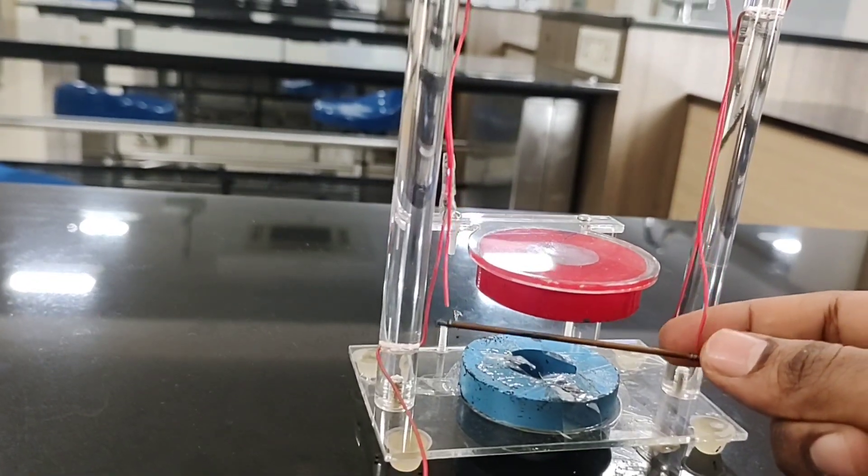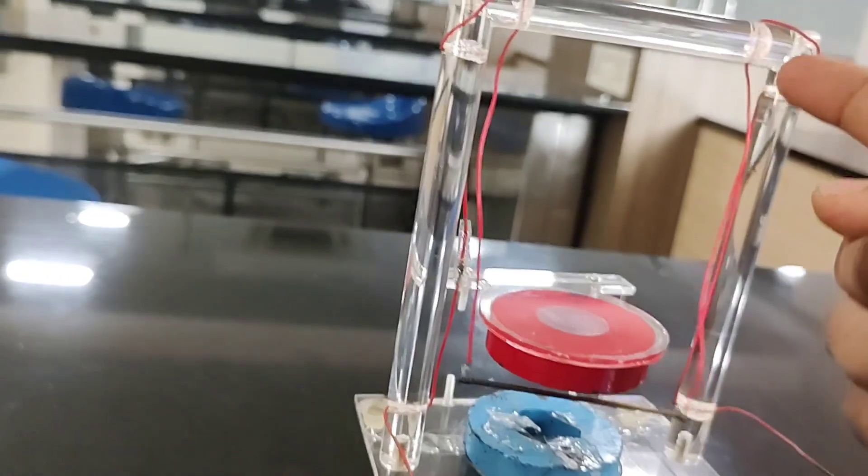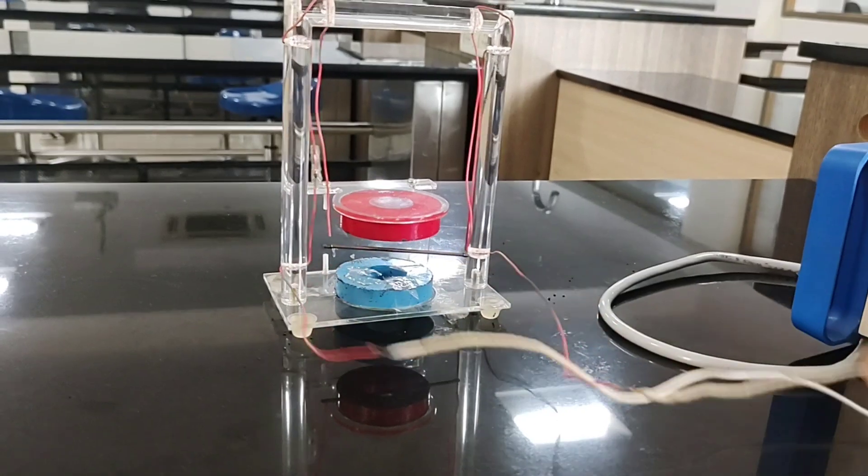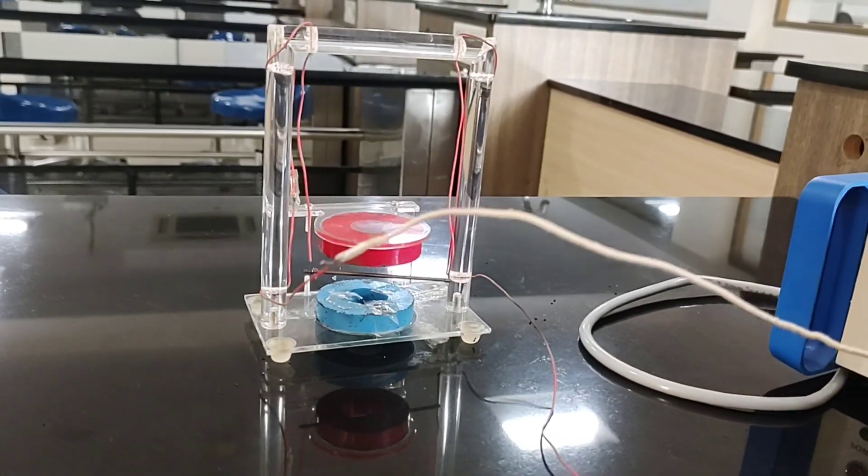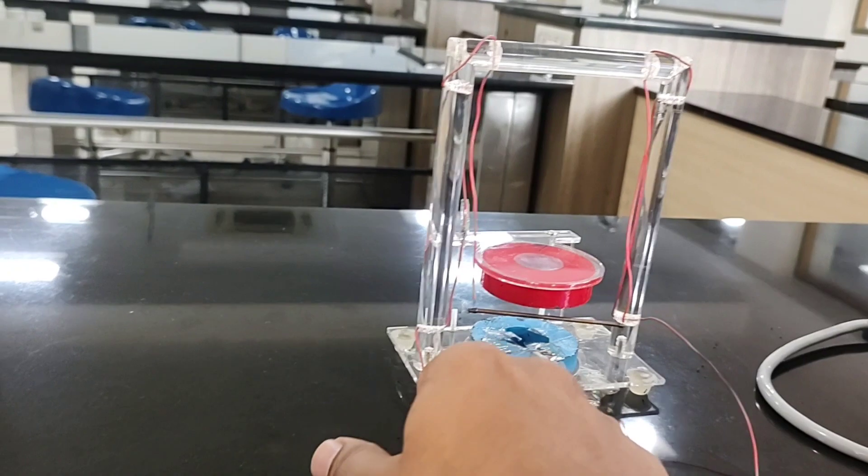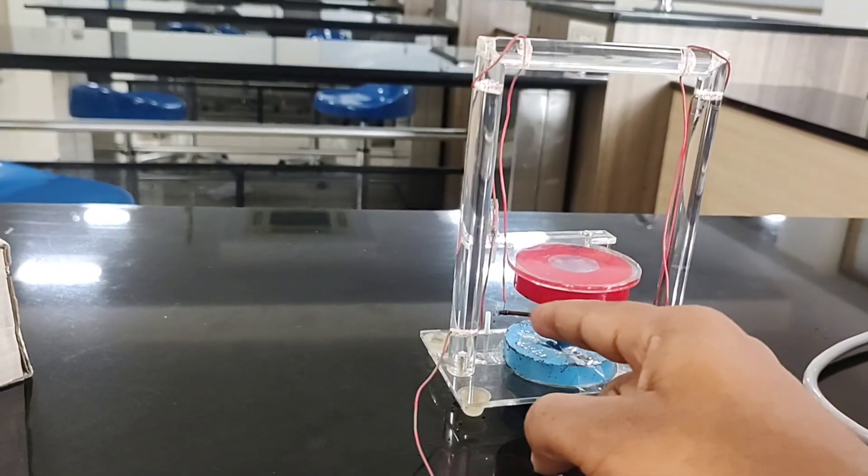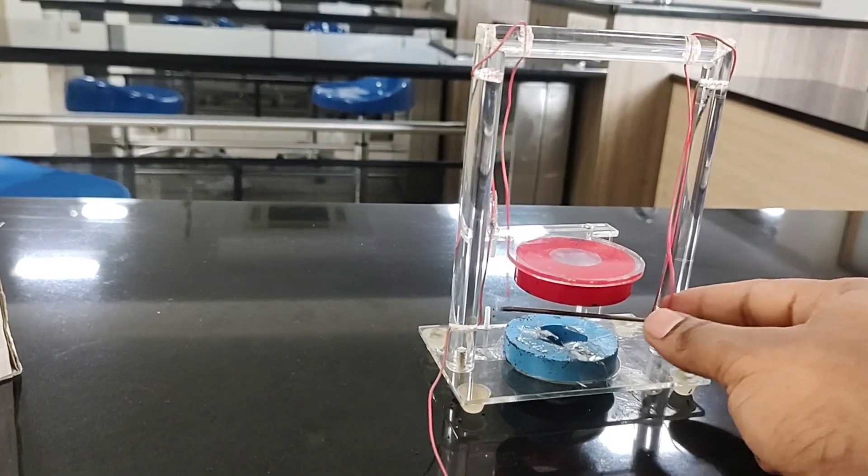One end of the conductor is connected to one of the terminals of the battery and the other end is connected to the other terminal of the battery. You can see the wire is passing over the stand and this rod is freely suspended, it is allowed to move.